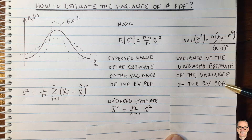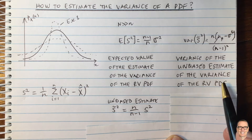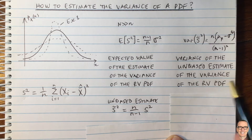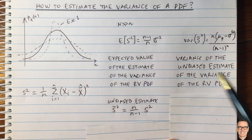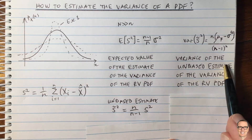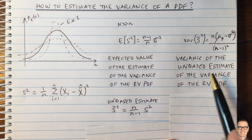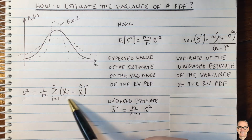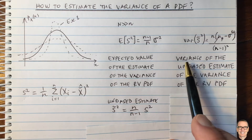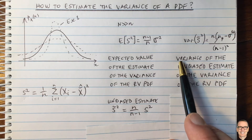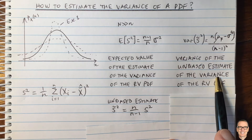Going backwards through this again: it's a random variable, it has a PDF, that PDF has a variance — drawn over here. We're going to take an unbiased estimate of that variance, the width of this curve. And because it's estimated from random samples, it will itself have a variance. So it's a variance of a variance.